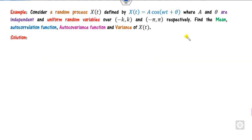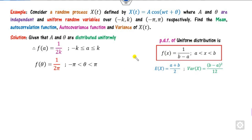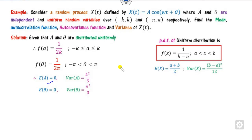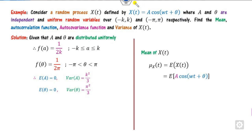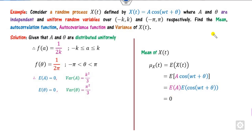Now let's solve an illustrative example. You have to find the mean, correlation, covariance, and variance. Given that A and θ are independent uniform random variables, the PDF of the uniform distribution is 1/(b−a). The PDF of A is defined over domain −k to k, and the PDF of θ is over −π to π, each equal to 1/(b−a). You can find the mean of A is 0 and the mean of θ is 0. The mean of x(t) is E[A·cos(wt+θ)]. Since A and θ are independent, we separate the expectation, and E[A] = 0, so the mean equals 0.